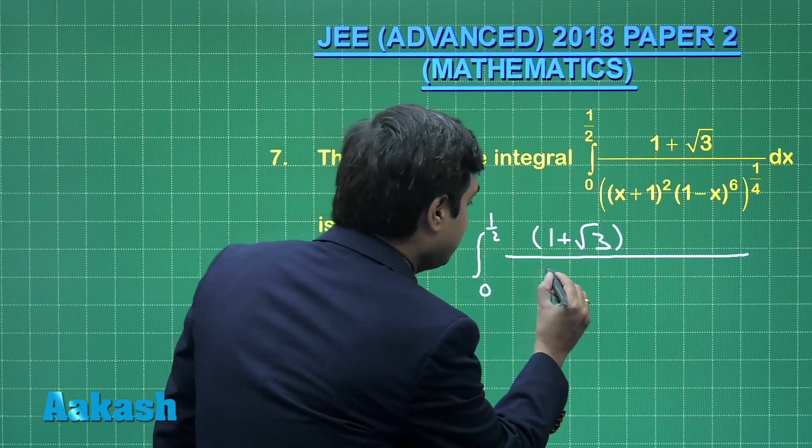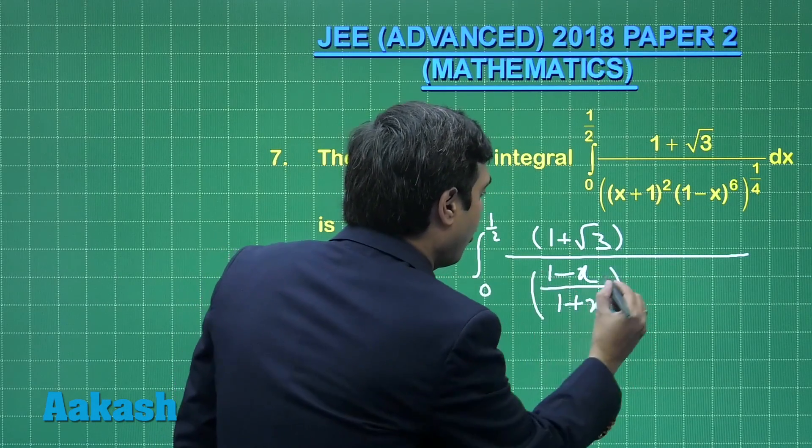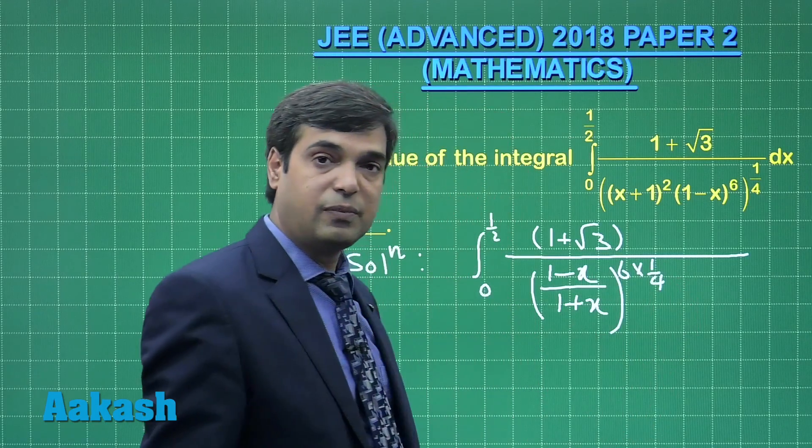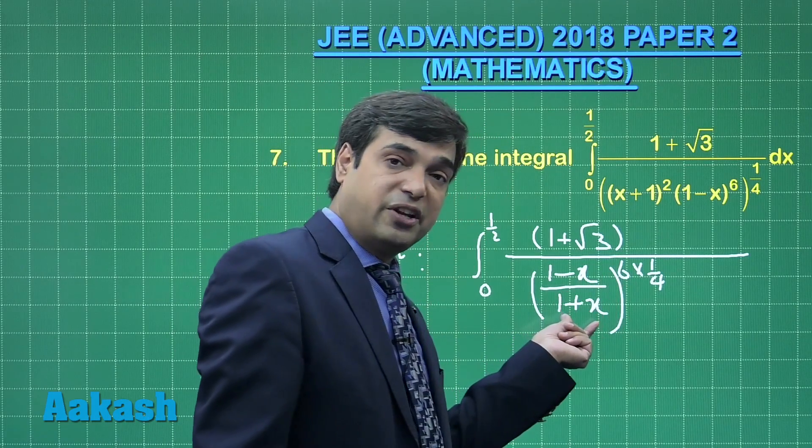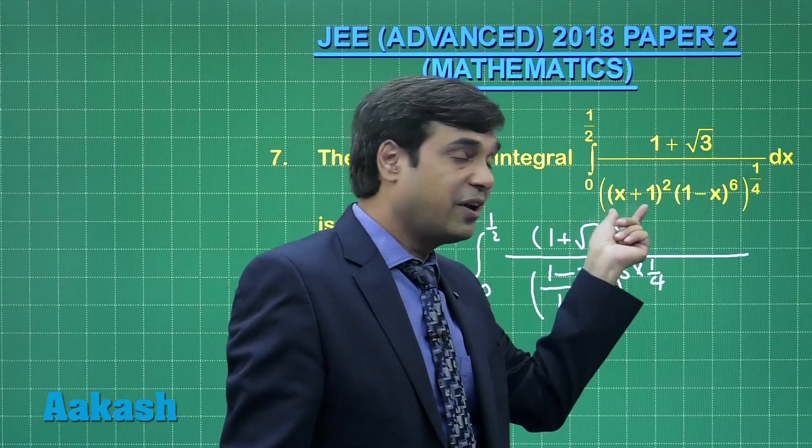Let us say I am changing it to (1 minus x) upon (1 plus x) form, whole to the power 6 to the power 1 by 4. Now we have in denominator (1 plus x) to the power 3 by 2, while we had the term (x plus 1) raised to the power half earlier.